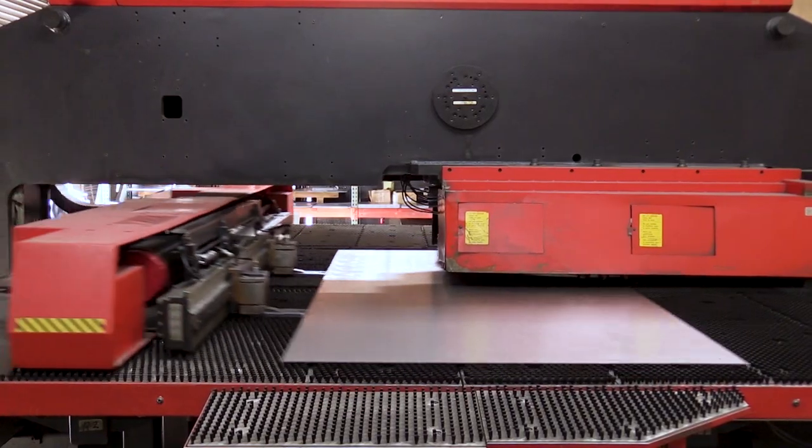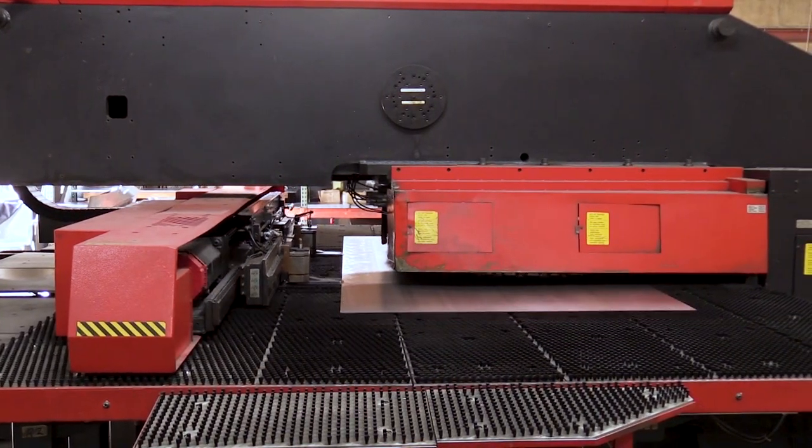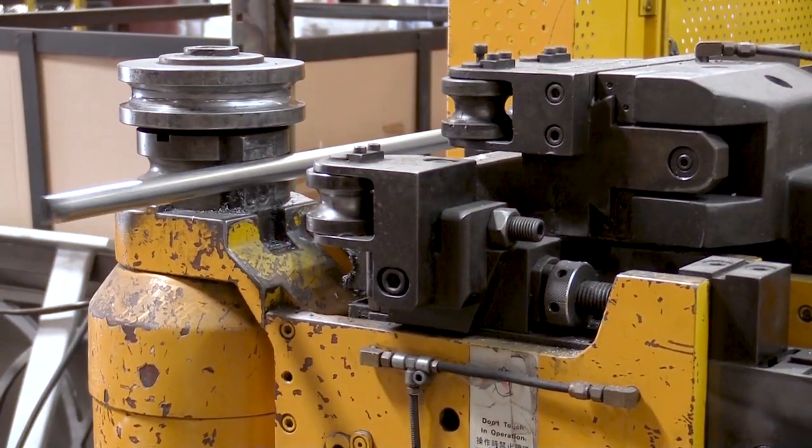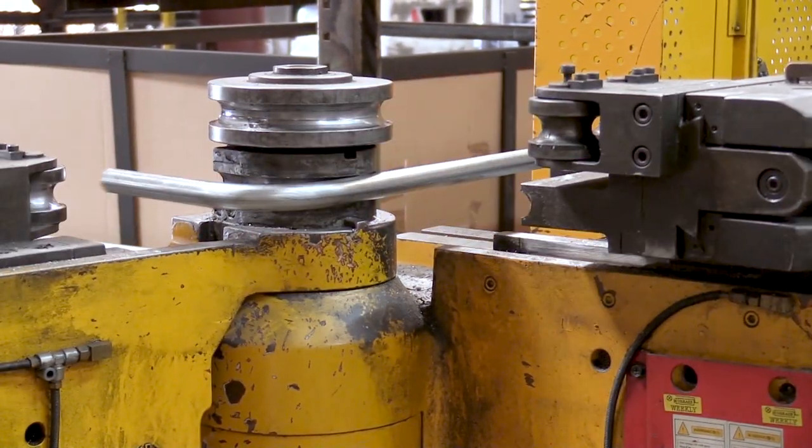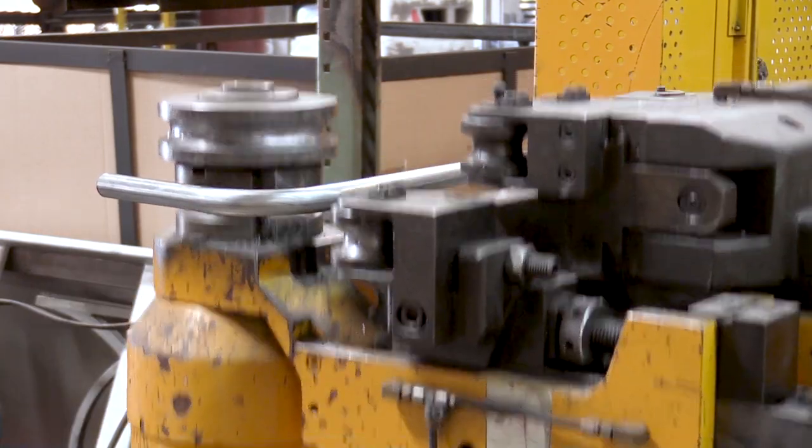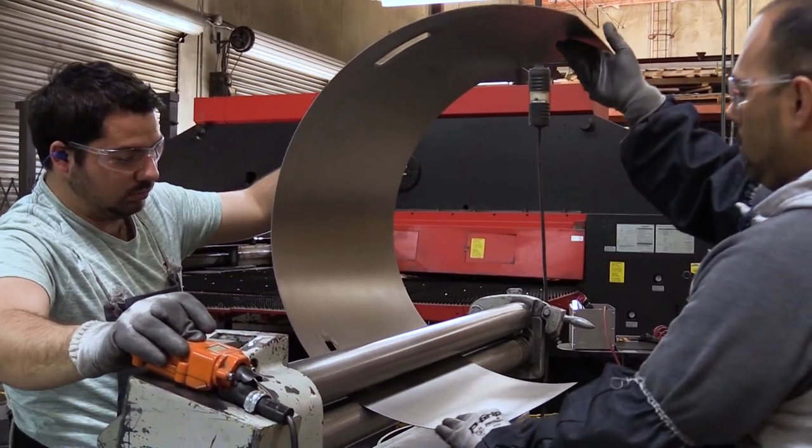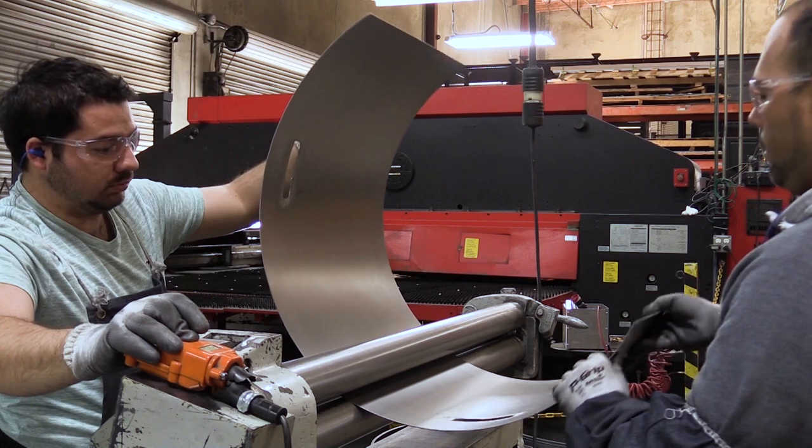A turret punch press custom cuts sheet metal for fire pit parts. A computer-controlled tube bender provides 100% accuracy and repeatability on furniture components. Manually operated roll benders create precise curves.